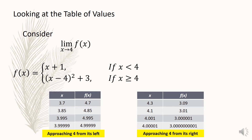Now, how about if the given function is a piecewise function? A piecewise function is a function composed of two or more functions with corresponding domains. In this given function, the first function is x plus 1, whose domain is x less than 4. The second function is (x minus 4) squared plus 3, whose domain is x greater than or equal to 4. Let us define the limit of f of x as x approaches 4. Observe the tables approaching 4 from its left and from its right — the values of x are getting closer and closer to 4.